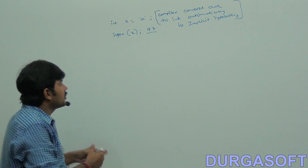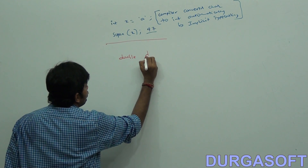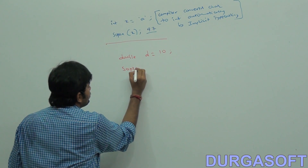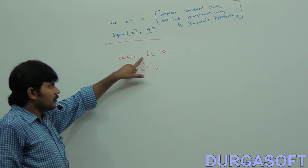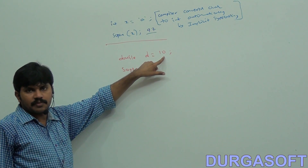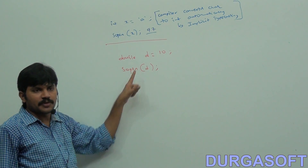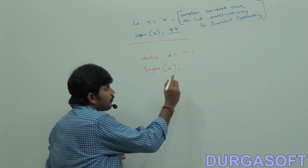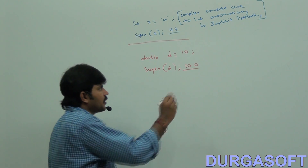Observe this one: I am taking double d = 10; and System.out.println(d). Internally, the int value 10 will be converted to double type. If I print, what is the value I am going to get? 10.0 — we are going to get 10.0 by default.